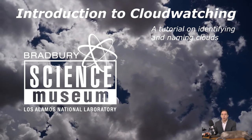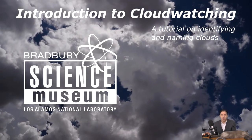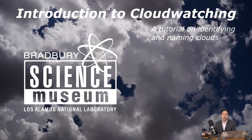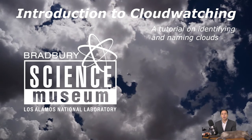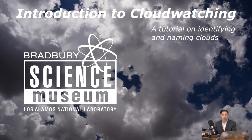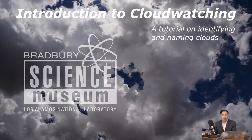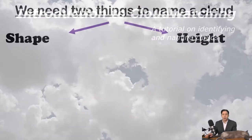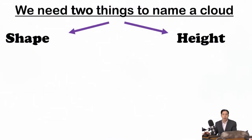If you're stuck inside, you can do it through the windows. If you live in New Mexico, you happen to live in one of the best places in the country for viewing clouds. What we're going to learn here is how to identify and name clouds. In order to do that, we need to know two things about the cloud: its shape and its height above the ground.